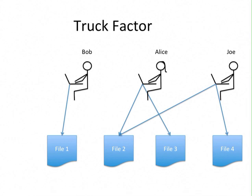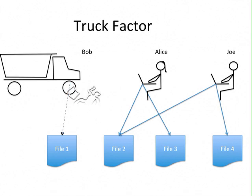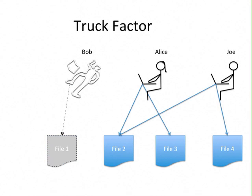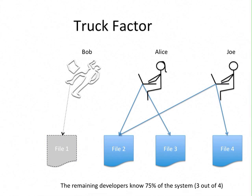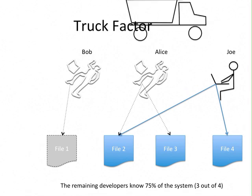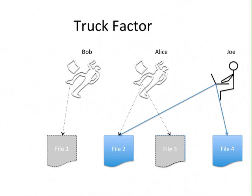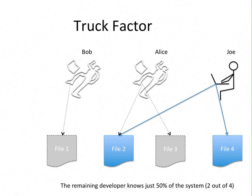So what happens if the truck hits Bob? Basically, with Bob leaving the team, our team overall loses track of any knowledge concerning file 1 and file 3. Anyway, the remaining developers know at least 3 out of 4 files, that is 75% of the system. But if another truck hits Alice, the result is that we lose any knowledge concerning file 3 also. Now the remaining developer Joe knows just about 2 out of 4 files, that is 50% of the system.